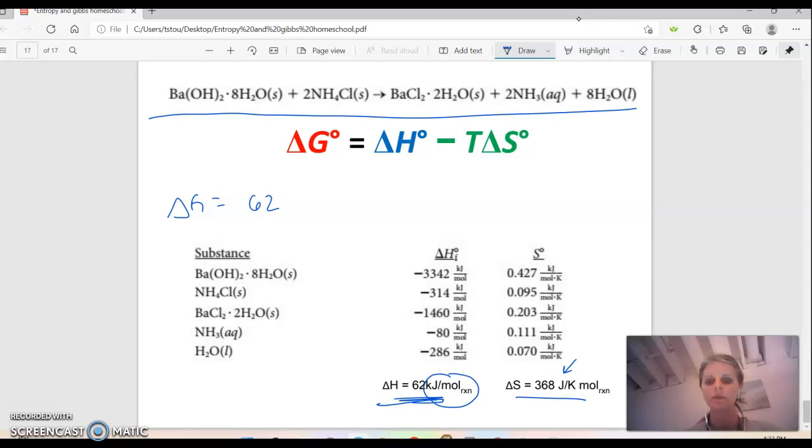So I'm going to have to take this joules number of the S and move it into kilojoules. That means I'm going to take the decimal place and move over to 1, 2, 3. So this is 0.368 kilojoules per Kelvin times mole of reaction.